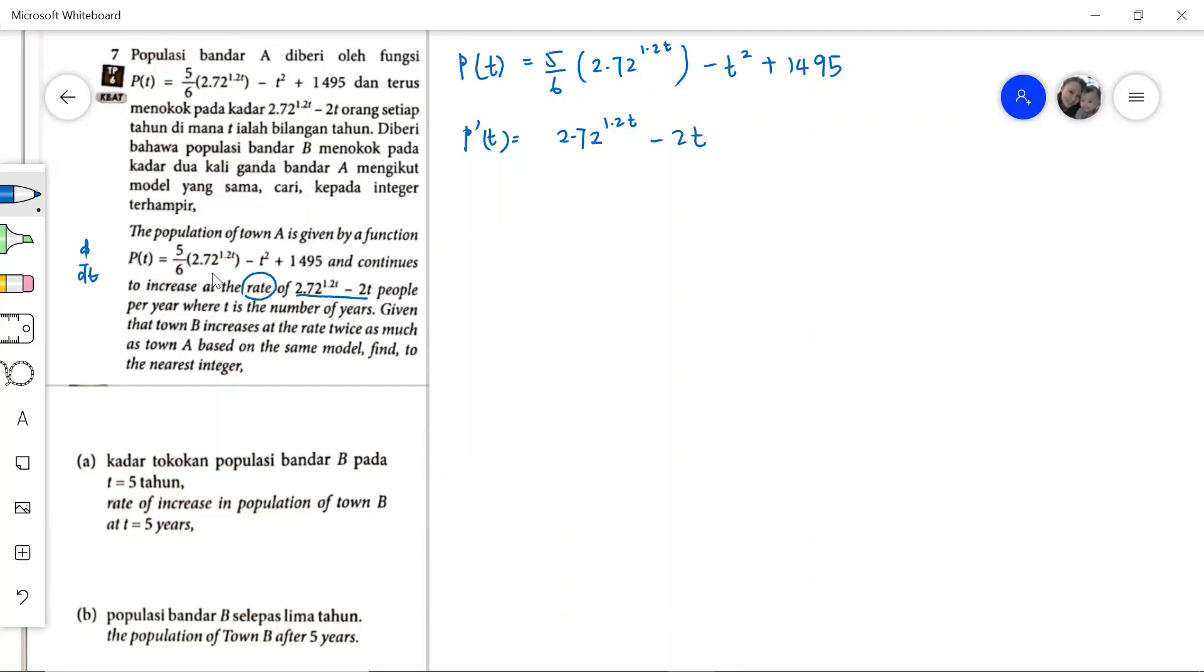We have town B increases at the rate twice as much as town A, based on the same model. This is the rate of increase for town A, and now we are given that the rate of town B, P'_B, is twice as much as town A.